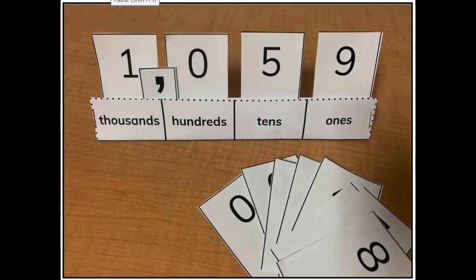Next, students will use a place value pocket. This tool allows students to represent the number in standard form and see the periods. A period is a three-digit grouping of whole numbers where each grouping is composed of a ones place, a tens place, and a hundreds place. Each period is separated by a comma.